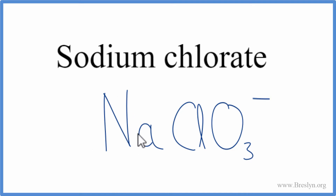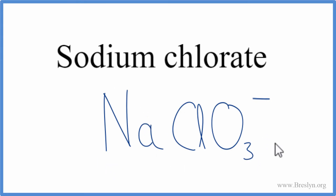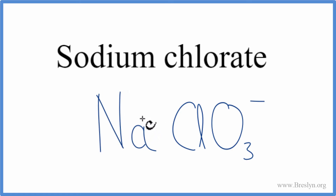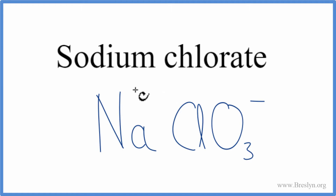Since we have a metal and a group of non-metals, this is an ionic compound, and we need to take into account the charges on the element and the polyatomic ion. When we look up the charge for sodium on the periodic table, we see it's in group 1, so it'll have a 1+ charge — we usually just write plus.